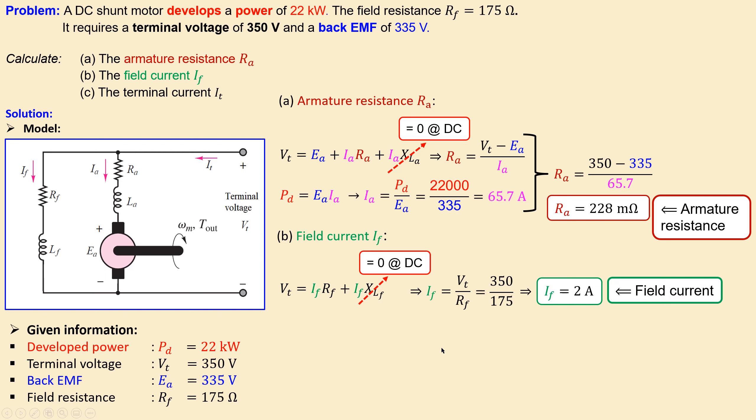That's for our field current. Now next is the terminal current. The terminal current using Kirchhoff current law will split in these two branches. That means the terminal current will be the armature current plus the field current. We know both currents. We just substitute the values and get 67.7 amperes. That will be our terminal current.